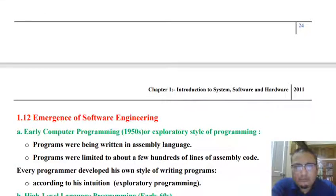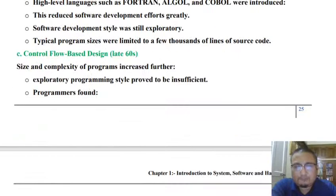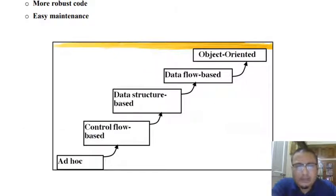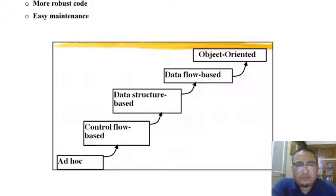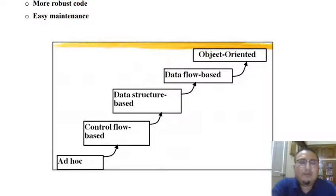Now let's move on to the emergence of software engineering — how software engineering has evolved with respect to time. The initial approach used for software development was called the ad hoc approach, or early computer programming or exploratory approach, where based on one's own intuition and opinion about the system, software was developed. Software was basically restricted to a few hundred lines of code. In this approach, assembly language programming was used, written based on one's own exploratory knowledge.